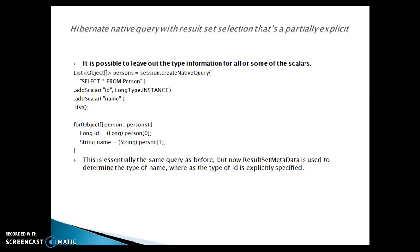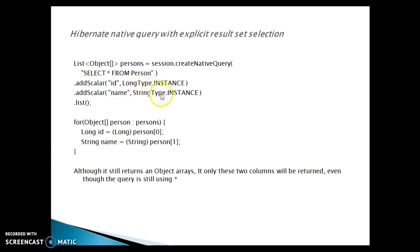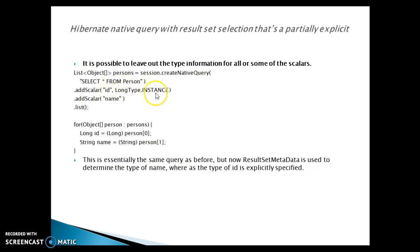For a partially explicit result set selection, you specify the type for some columns using addScalar but not all. For example, you specify LongType for ID, but you do not specify any type for name. Hibernate is still capable of converting name into a String and will not throw any error. So addScalar name is partially explicit — Hibernate infers the type for unspecified columns.